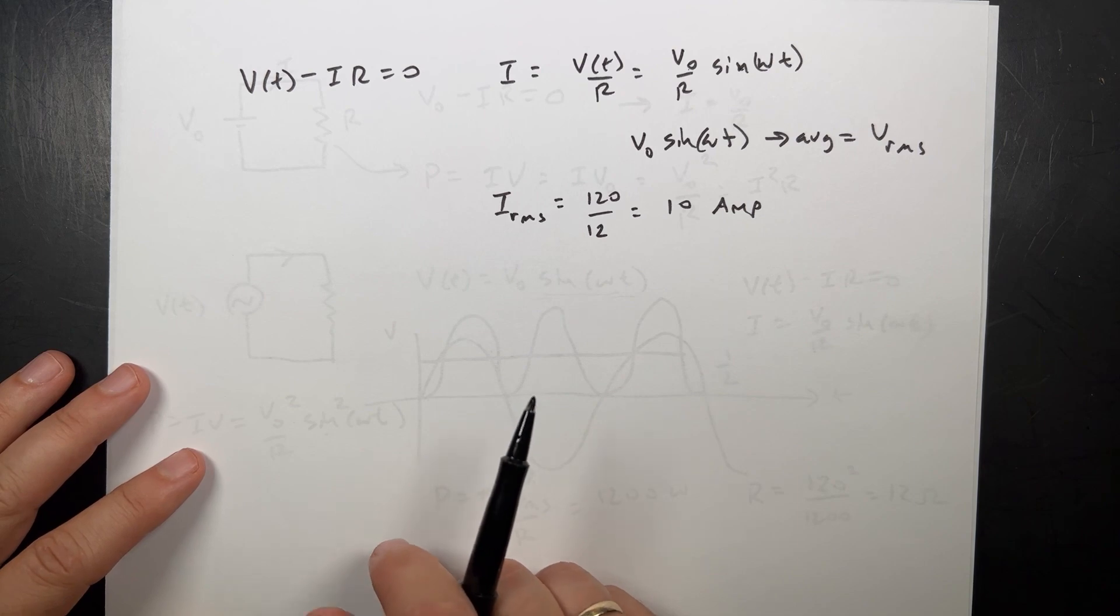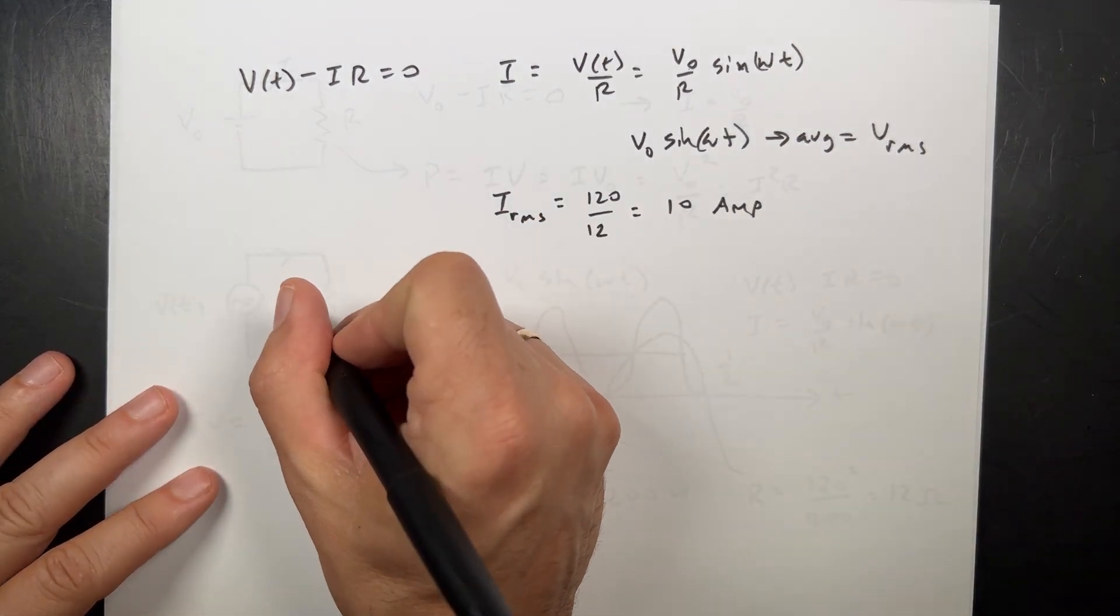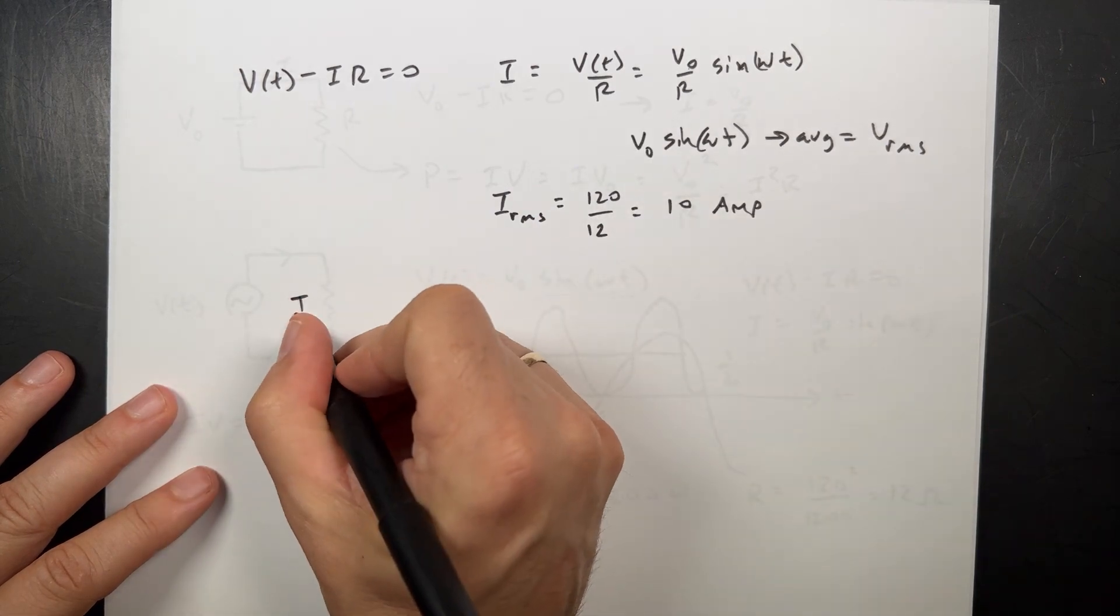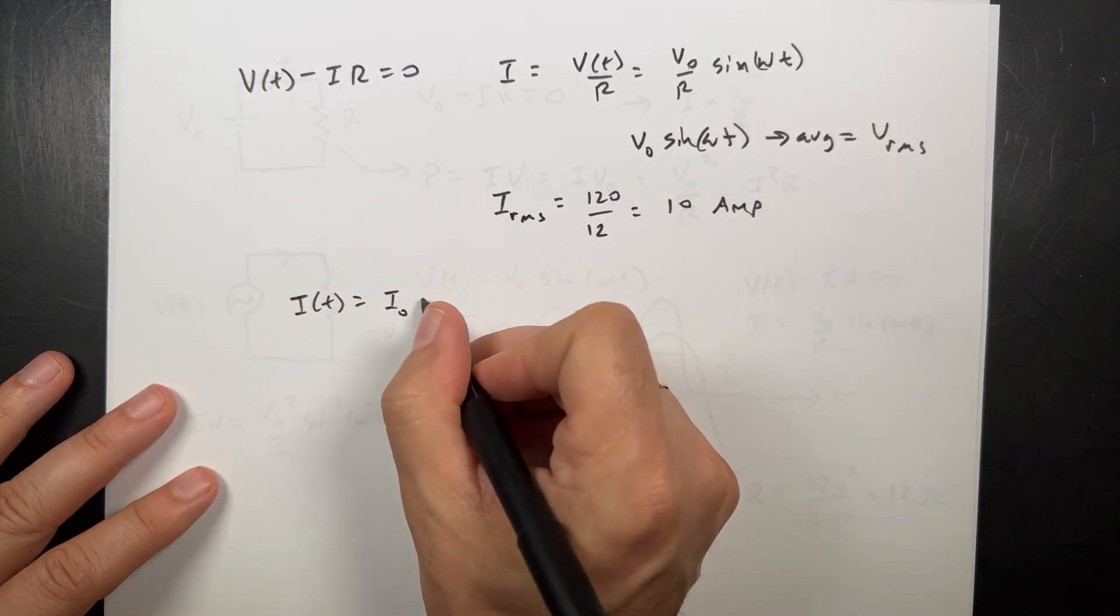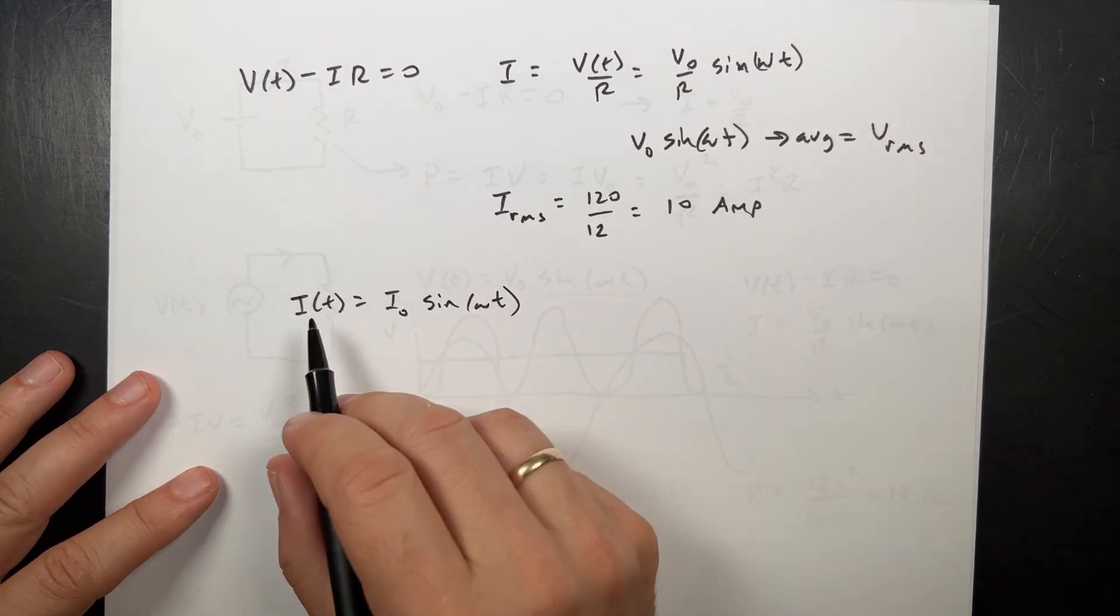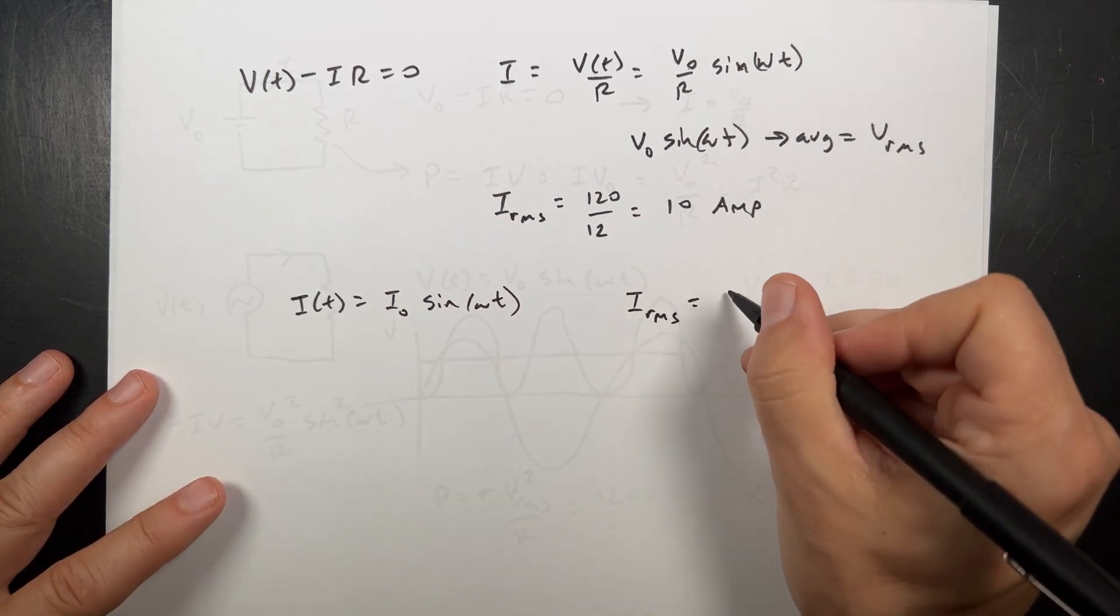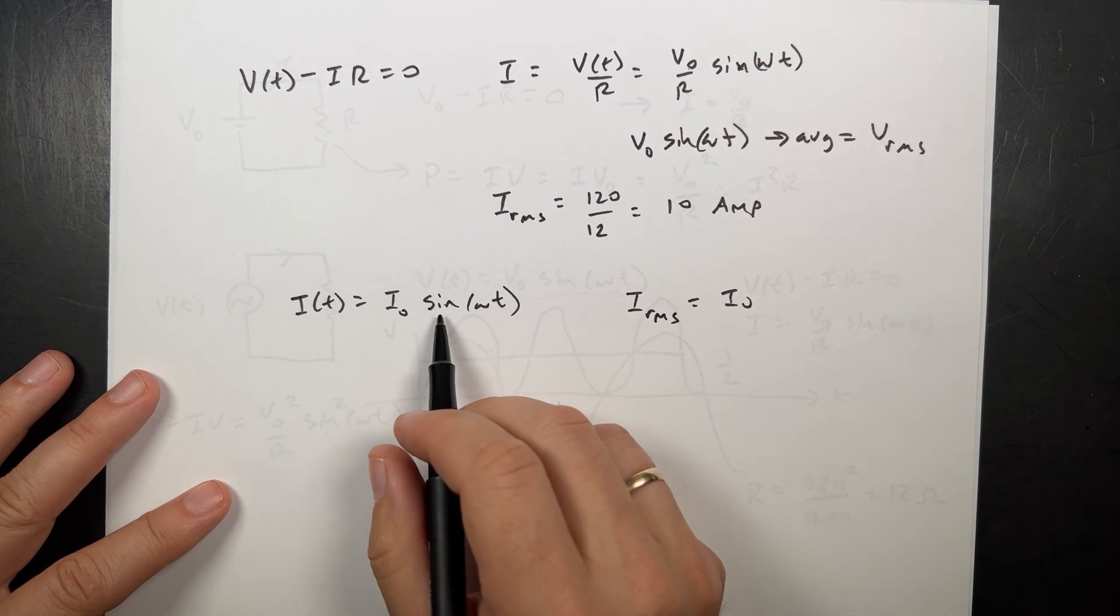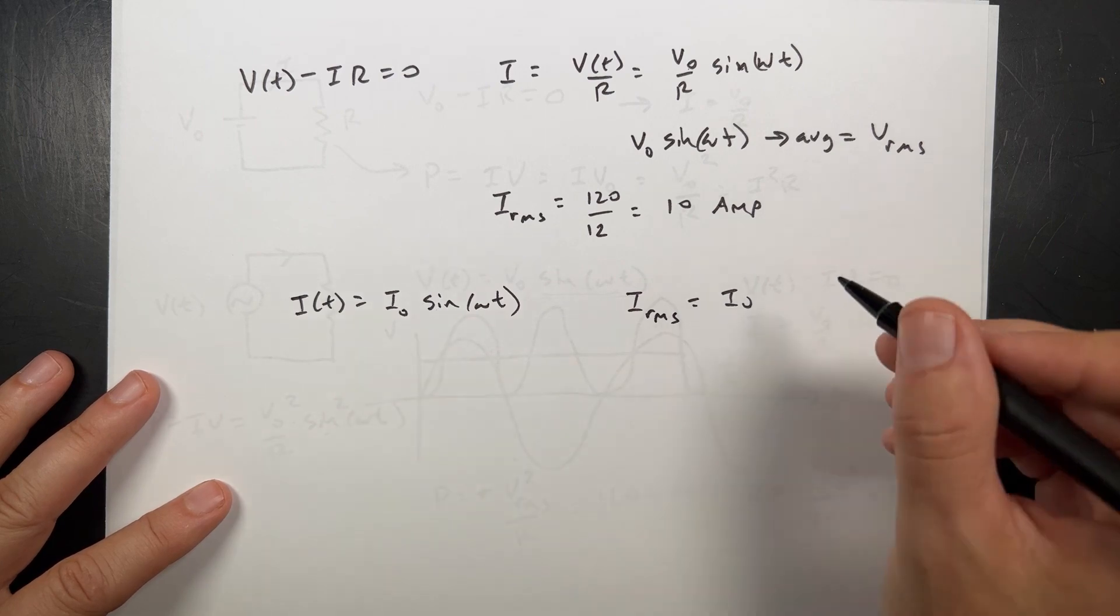What is the maximum instantaneous power? Okay, so now let's say I as a function of T equals I0 sine omega T. And I said that the RMS, I RMS, which is sort of like the average, is I0, and then the average of sine squared is 1 half, so the average of sine is 1 over the square root of 2.